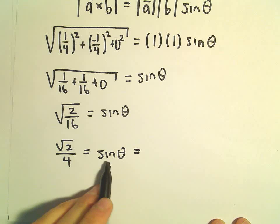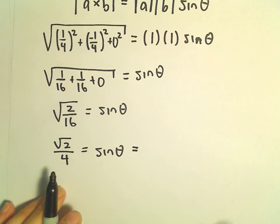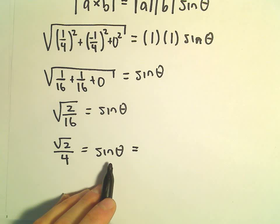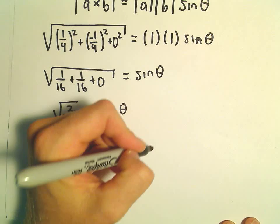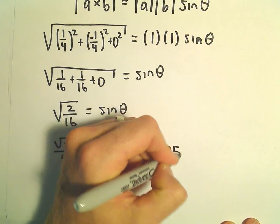I don't know an angle off the top of my head, a sine of what angle gives me root two over four. The square root of two divided by four, I'm getting this to be roughly zero point three five.